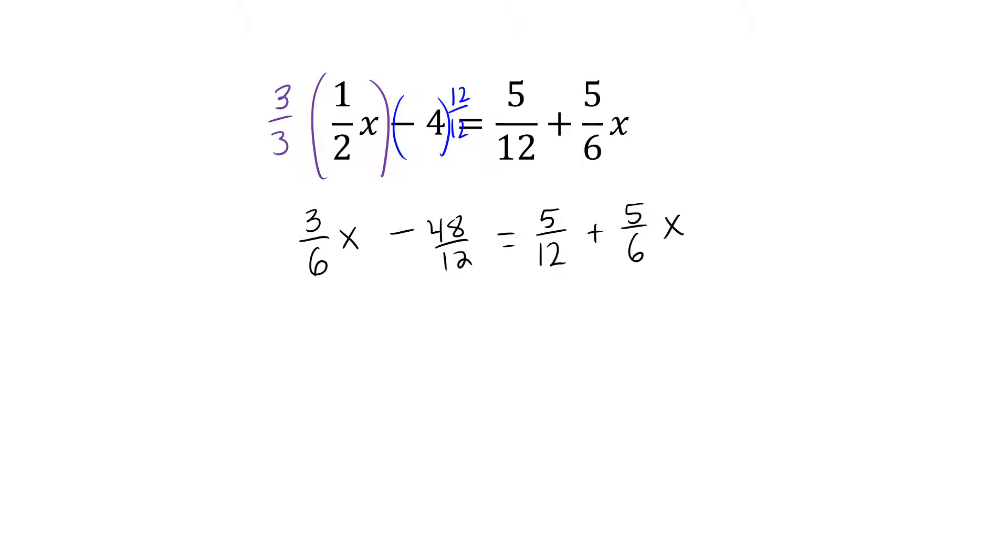To solve this equation, we now want to put the x terms on one side, so we're going to subtract 3/6x from both sides of the equation. At the same time, we're also going to subtract 5/12 from both sides of the equation.